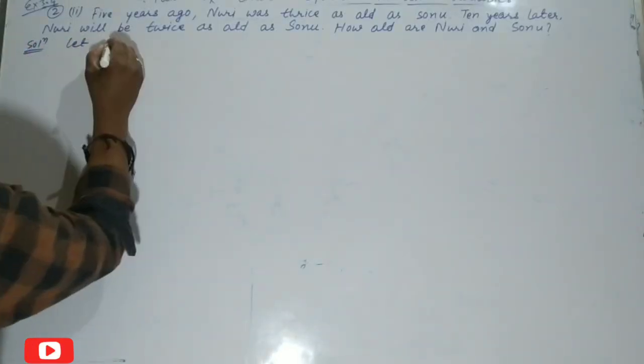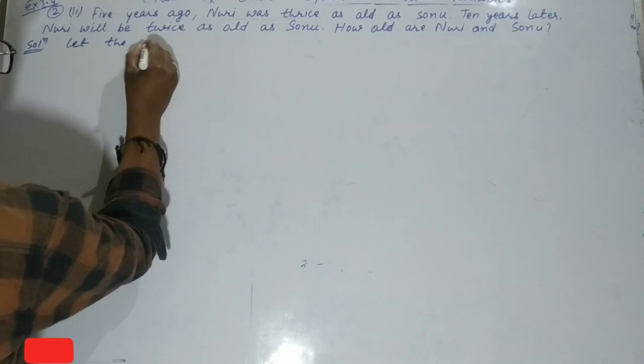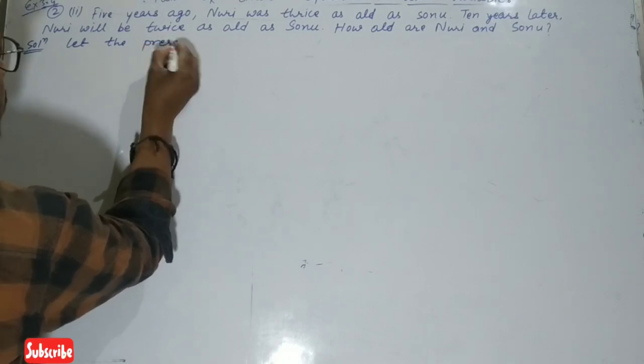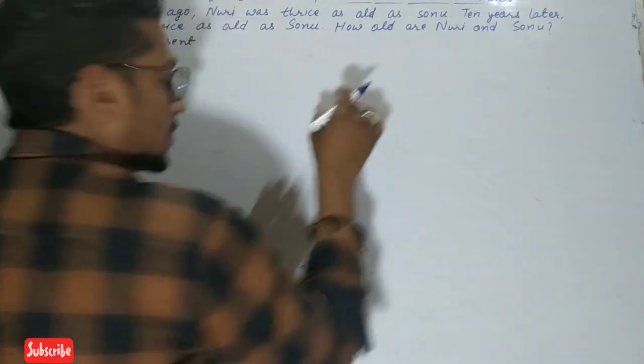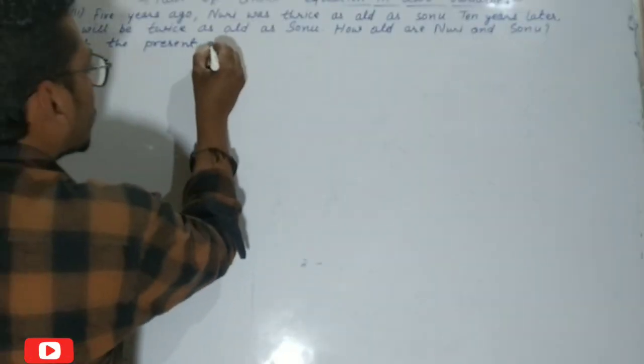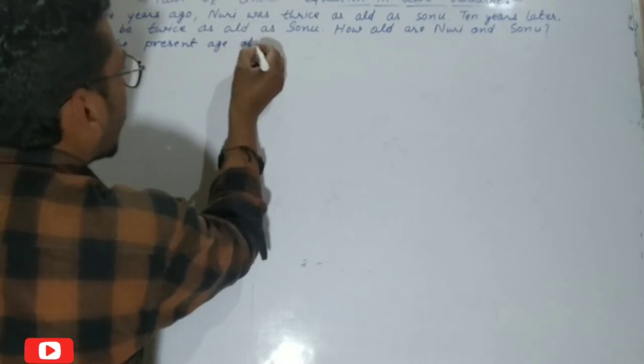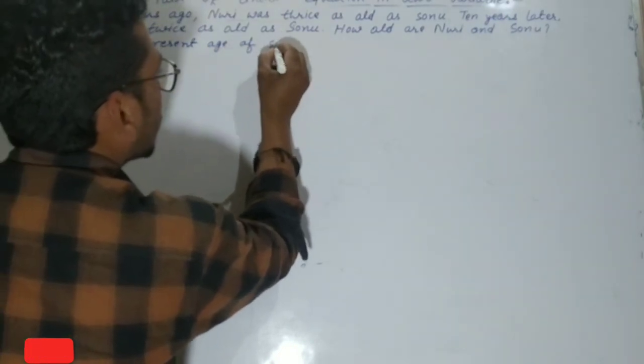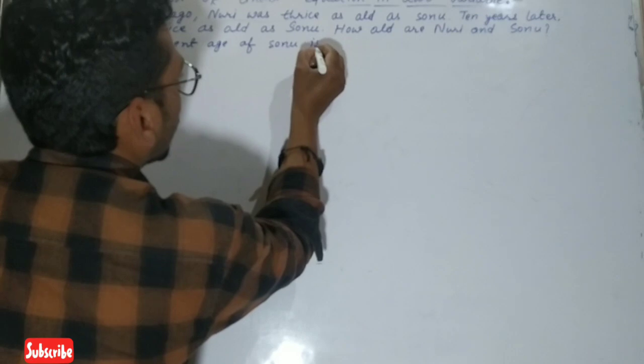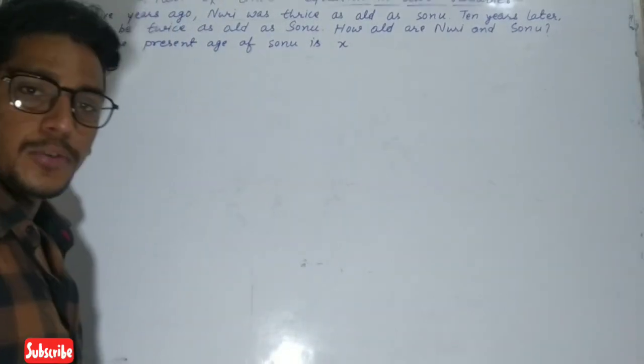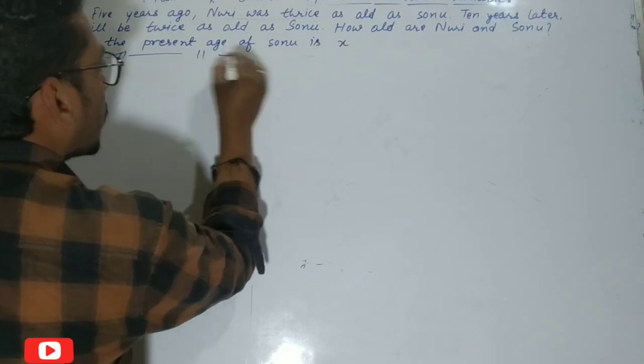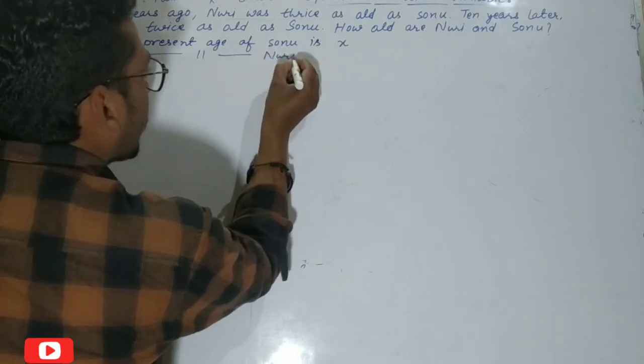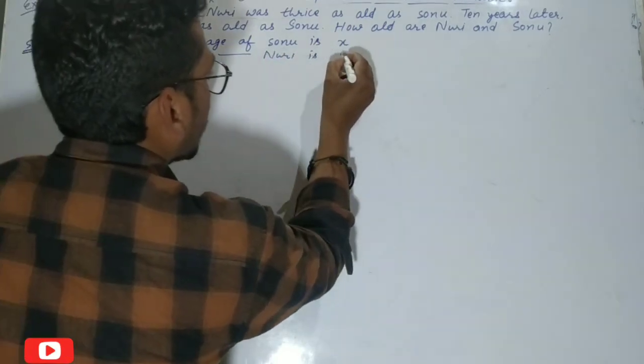Solution: We will take the present age. Let the present age of Sonu be x and the present age of Nuri be y.